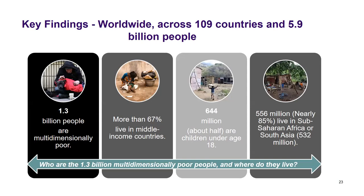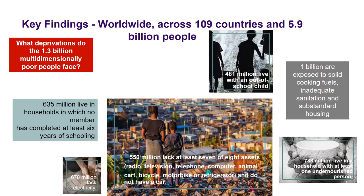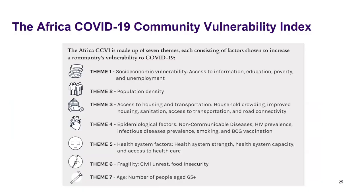From the global MPI, across 109 countries and 5.9 billion people, there are 1.3 billion who are multidimensionally poor. More than 67 percent live in middle-income countries, and around 644 million are children aged under 18. Many live in sub-Saharan Africa or South Asia. The global MPI tells us the characteristics of those people who are poor — in which region they come from, and the social demographics of people living in poverty.